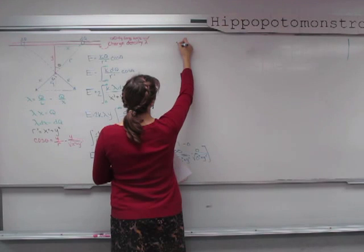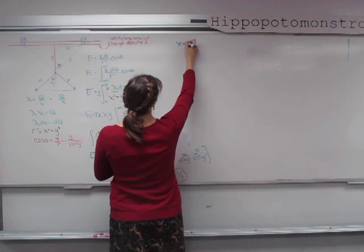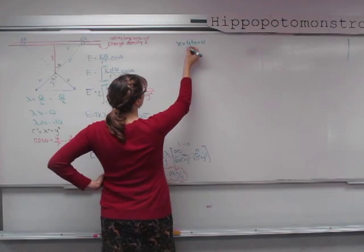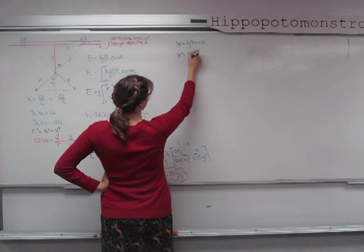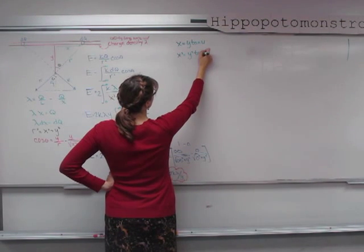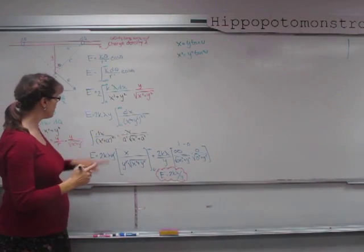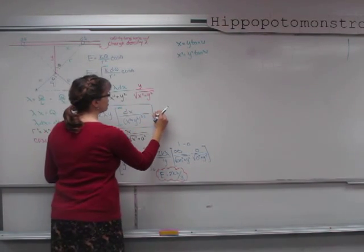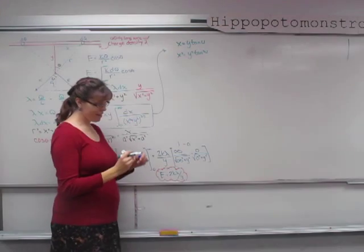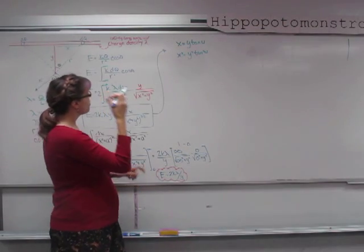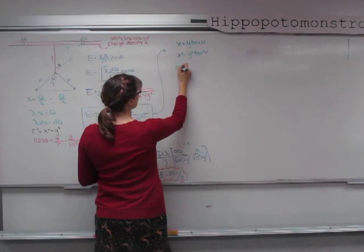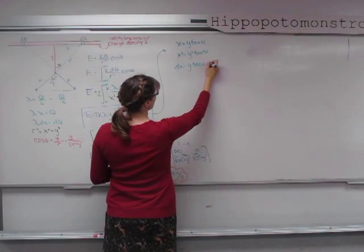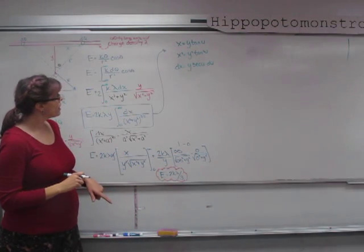With the substitution x = y·tan(u), we get x² = y²·tan²(u). We'll also need dx: using the chain rule, since y is a constant, dx = y·sec²(u)·du. Let's now work through the integral the long way using this substitution.